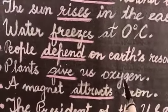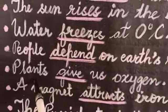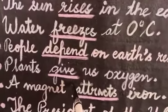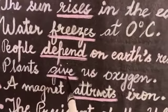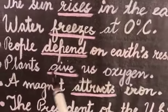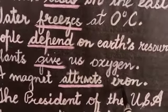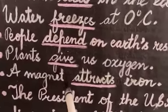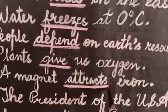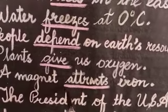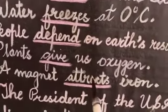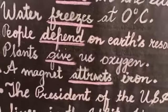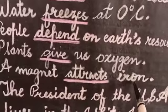Plants give us oxygen. 'Plants' is a plural subject — so many plants — and we have used 'give' with it. A magnet attracts iron. 'A magnet' is a singular subject, so we have used 'attracts'. The base verb is 'attract', and since the subject is singular, we added an S to make it the singular verb.